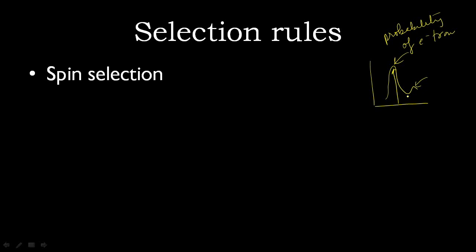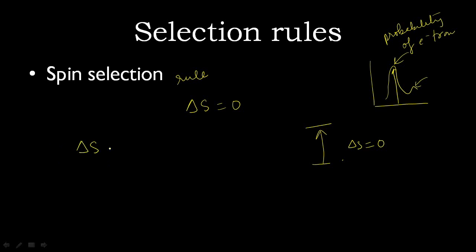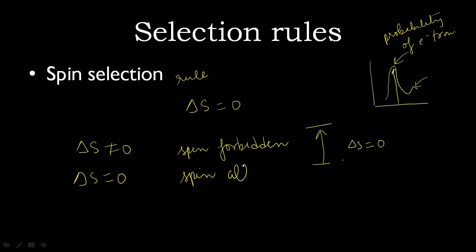The first selection rule is the spin selection rule. The rule states that ΔS should be equal to 0. This means that during a transition, the spin of the electron must not change — an electron jumps from one energy level to the next, but its spin must remain the same. When ΔS is not equal to 0, the transition is spin forbidden. When ΔS equals 0, the transition is spin allowed. This rule is also known as the rule of spin multiplicity.